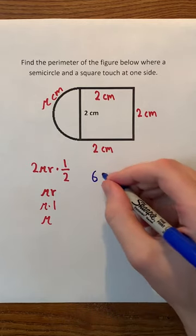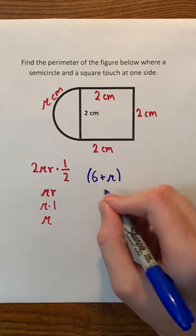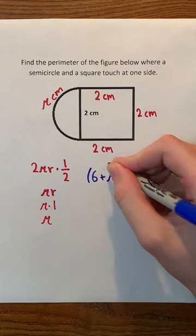And then, we just add the π. So, the perimeter of the figure must be 6 plus π centimeters.